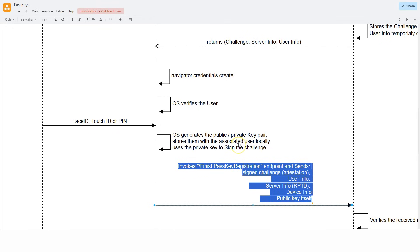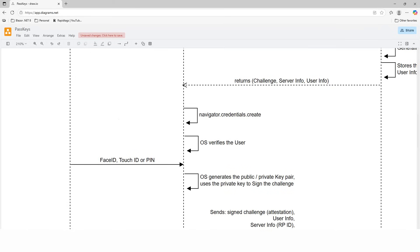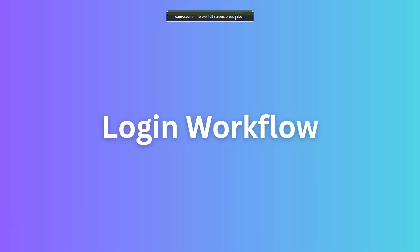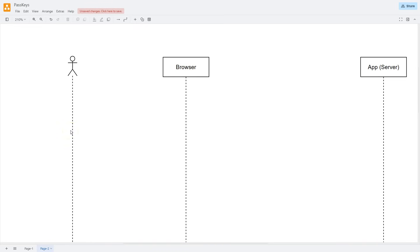The private key is only stored locally — that's why passkeys are phishing-attack resistant. Even if a fake website initiates a web authentication workflow, your Face ID, Touch ID, or PIN will never leave your local environment, and your private key will never leave your local environment. Therefore, a phishing attack with a fake website will never be able to obtain anything useful. Now let's look at the second workflow: the login — or authentication — workflow, which occurs when the user already has a passkey registered with the application.